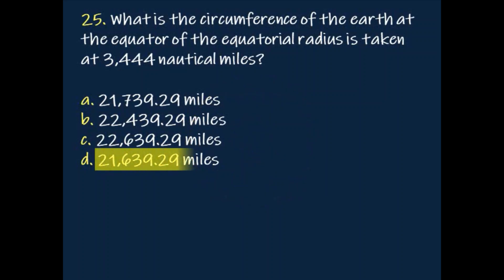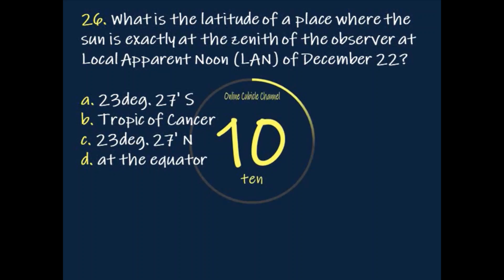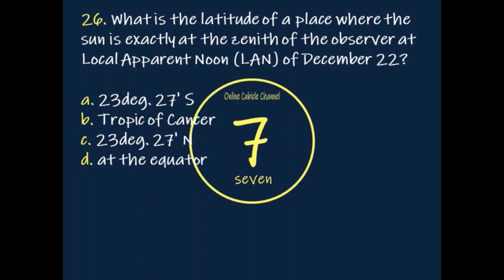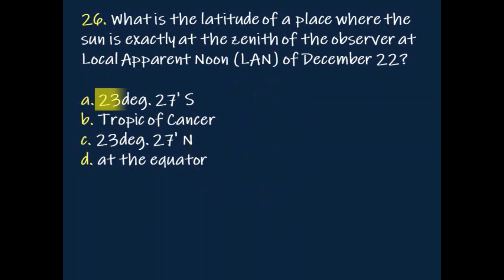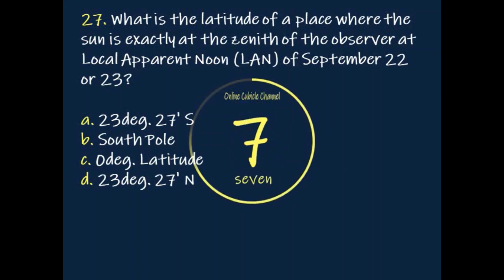Answer: 21,639.29 miles. Question: What is the latitude of a place where the sun is exactly at the zenith of the observer at local apparent noon (LAN) of December 22nd or 23rd?